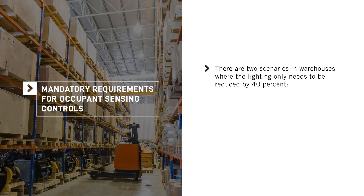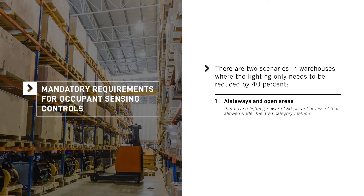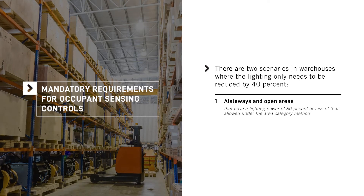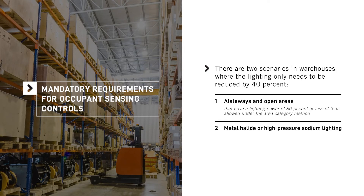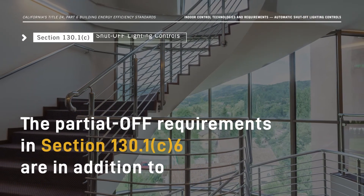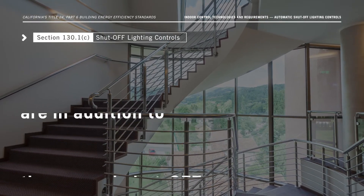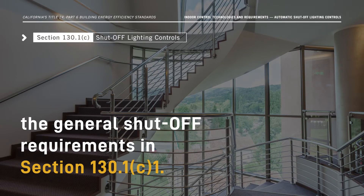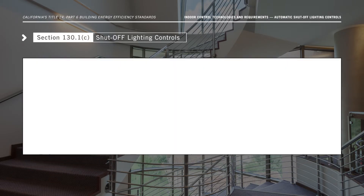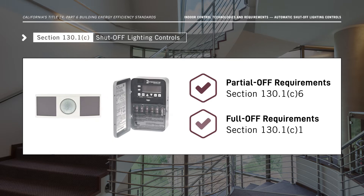There are two scenarios in warehouses where lighting only needs to be reduced by 40 percent: when aisleways and open areas have a lighting power of 80 percent or less of that allowed under the area category method, and when metal halide or high pressure sodium lighting is installed. It's important to note that the partial-off requirements in Section 130.1c6 are in addition to the general shutoff requirements in Section 130.1c1. A partial-off occupancy sensor satisfies Section 130.1c6; however, a full-off occupancy sensor or time switch is required to satisfy Section 130.1c1, which requires automatic shutoff when the space is normally unoccupied.